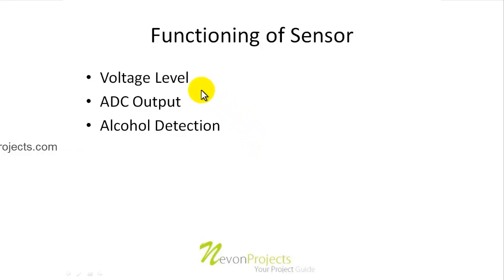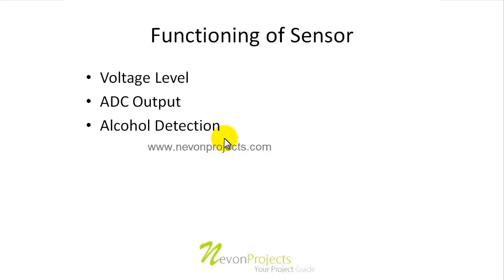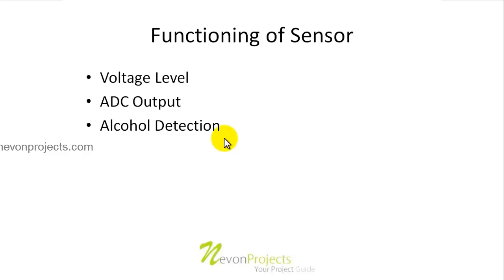The functioning of the sensor works on voltage levels, which depend upon the level of alcohol content present in someone's breath or in the air around the sensor. For example, if we spray alcohol around the sensor, it creates some voltage. If we spray more alcohol, the level will be closer to the higher limit of ADC which is 1024, and if it's low it comes close to 0 ADC level. In the digital part, it goes to 1 when a particular limit set by the manufacturer is reached, or simply gives 0. In this way the alcohol sensor works. Thank you.